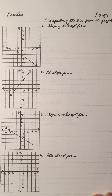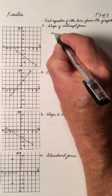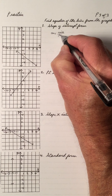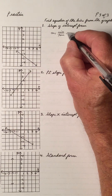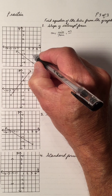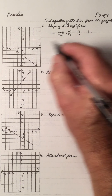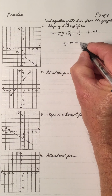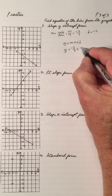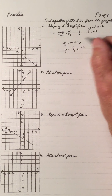Now we have some practice — pause the video and work out these equations. Find equations of this line in slope y-intercept form. The slope is rise over run. Going up 2 and left 3 gives us negative 2 over 3. And the y-intercept is negative 2, cutting the y-axis at negative 2. So y equals negative 2 thirds x minus 2.